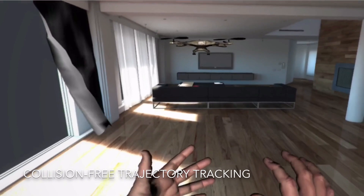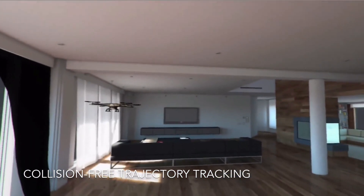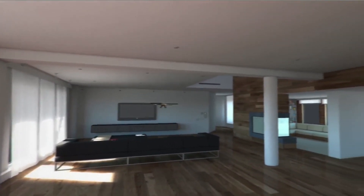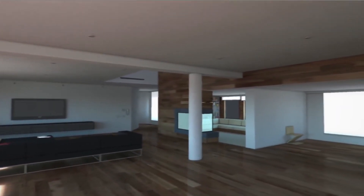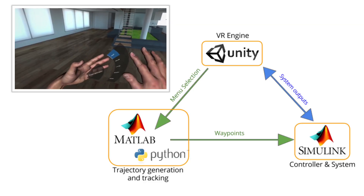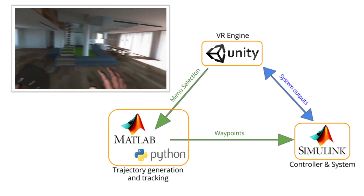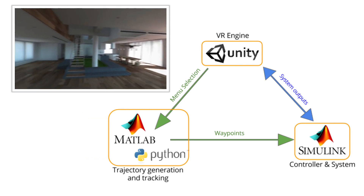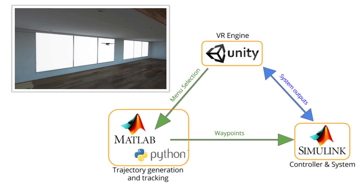Through menus operated by a Leap Motion hand tracker, the human subject commands the quadrotor to fly to various rooms — that is, Unity waypoints — along pre-computed paths that avoid collisions. The waypoints connect with the Simulink path-following algorithm through a Python bridge.